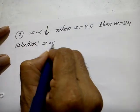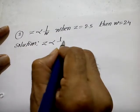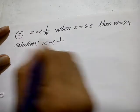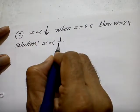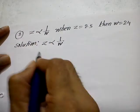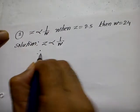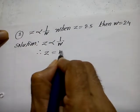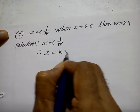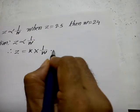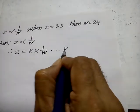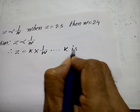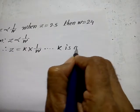Solution: z is inversely proportional to w. Therefore, z is equal to K into 1 upon w, where K is constant.